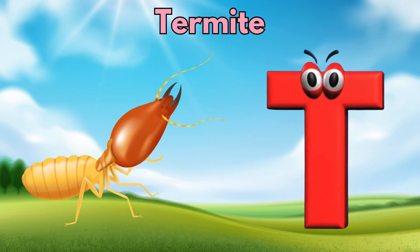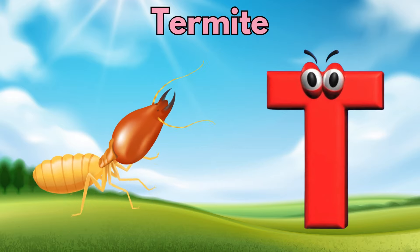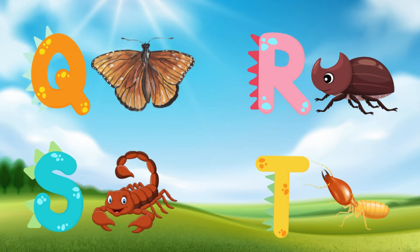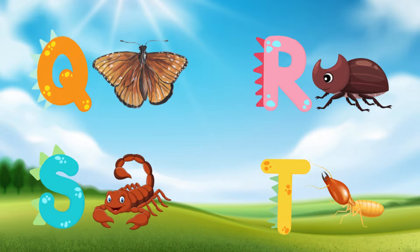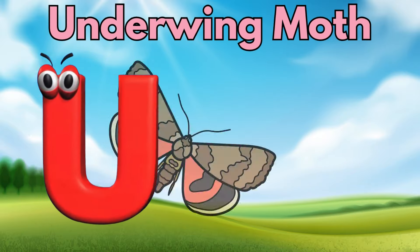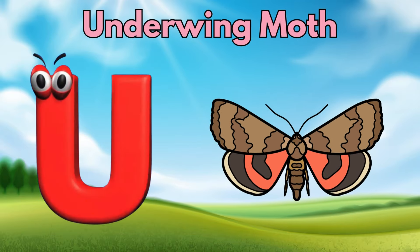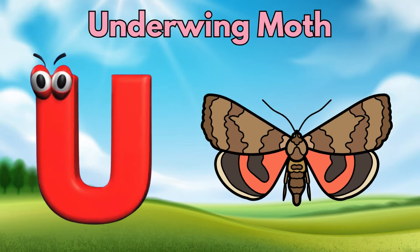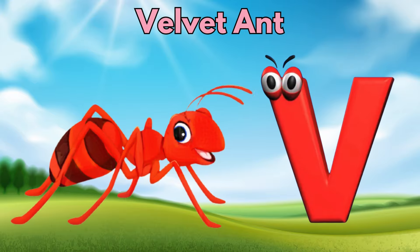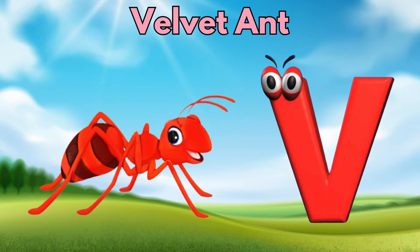T is for termite. T, t, termite. U is for underwing moth. U, u, underwing moth. V is for velvet ant. V, v, velvet ant.